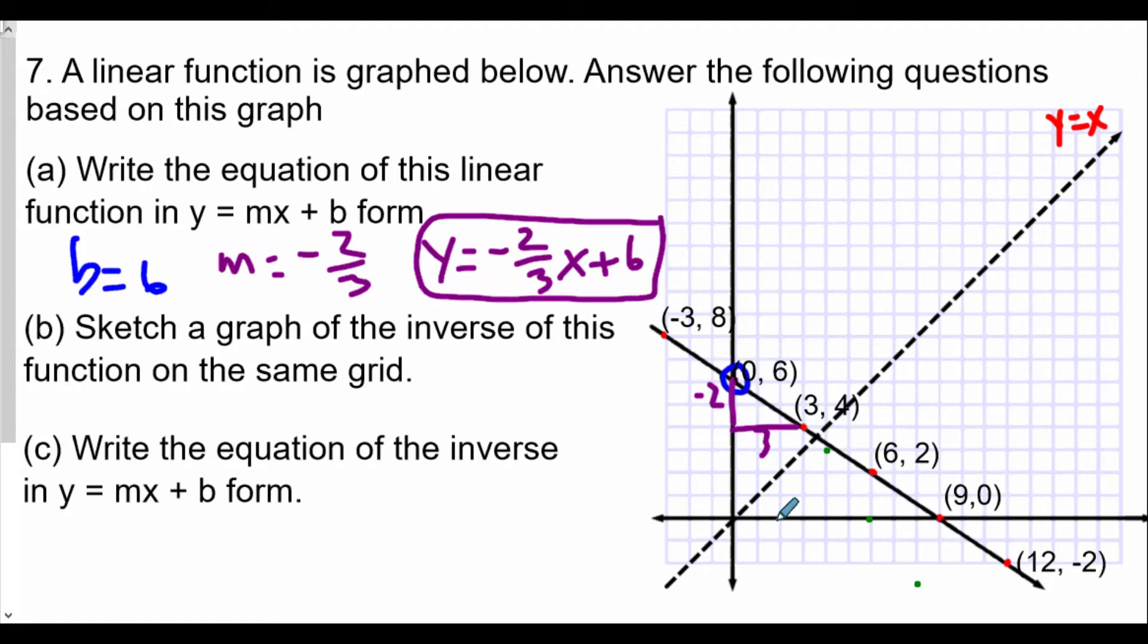6, 2 becomes 2, 6. 9, 0 becomes 0, 9. Finally, 12, -2 becomes -2, 12. We've plotted the points in green.